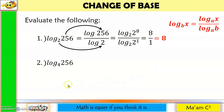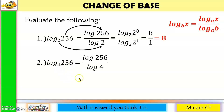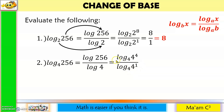Another one: the logarithm of 256 to the base 4. So this will become the logarithm of 256 divided by the logarithm of 4. I'm going to express 256 as 4 to the 4th power and choose 4 as my base. So I express my denominator as the logarithm of 4 to the 1st power to the base 4. So the numerator is 4, and the denominator is 1, and 4 divided by 1 is equal to 4.